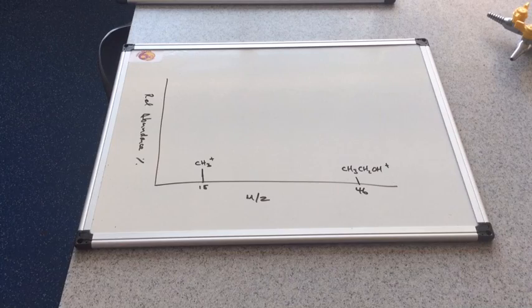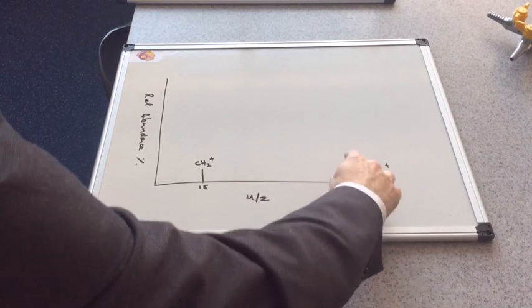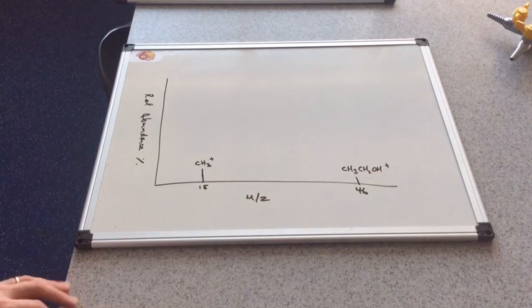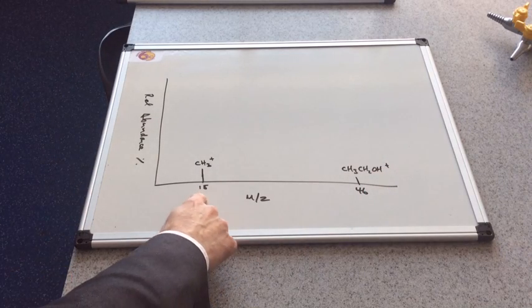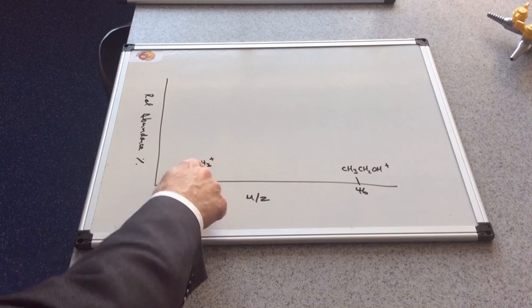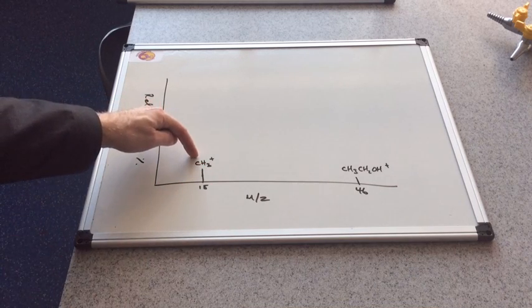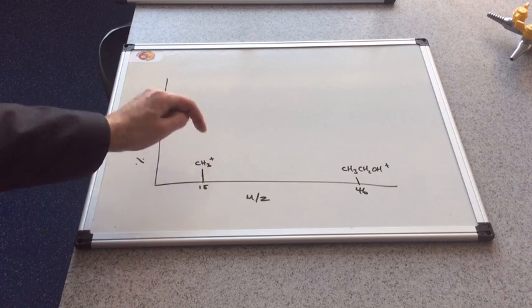If we go back to the mass spectrum for ethanol, you can see the molecular ion peak is there where we put it before. But we've also now got this extra peak here, and this is due to a methyl fragment. So the correct formula for that would be CH3+.